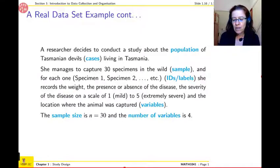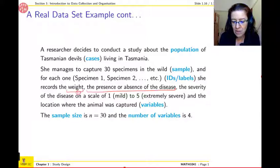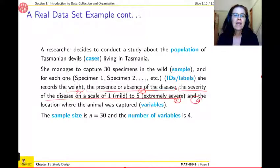So in that case, the weight, presence or absence of the disease, severity and all that, they're called a variable. In that case, she records four things on every specimen. So this four is the number of variables, and the variables are each of those. So that would be variable number one would be the weight. Variable number two, presence or absence of the disease. Variable number three, the severity of the disease. And the location would be your variable number four.